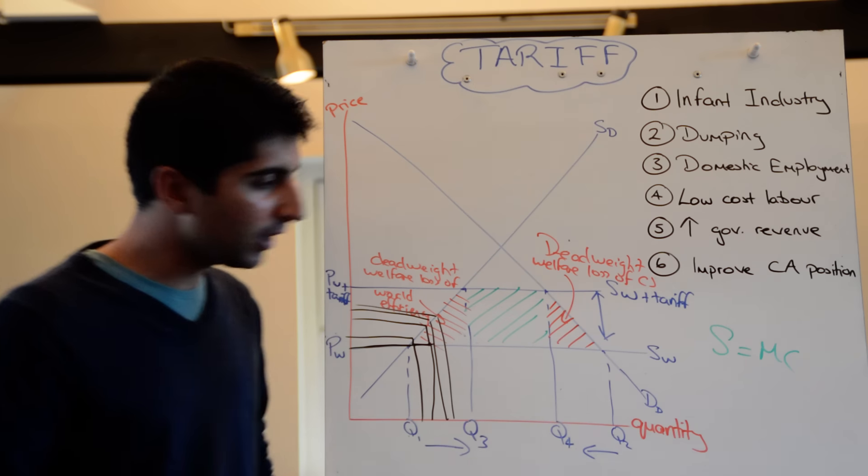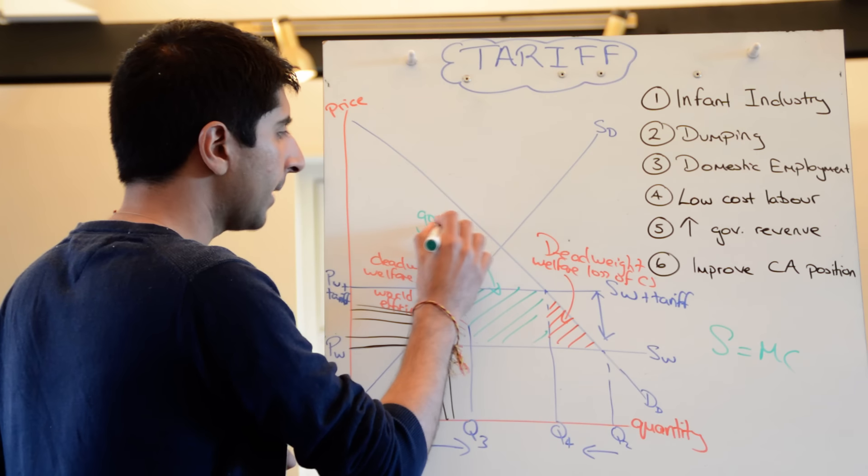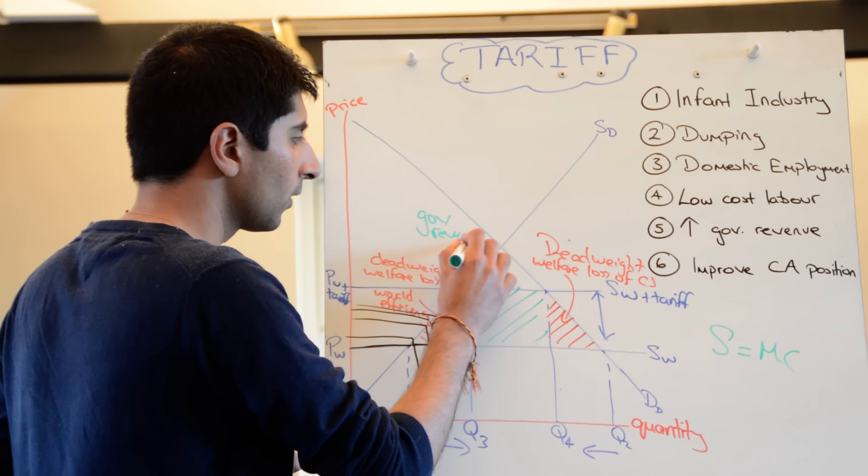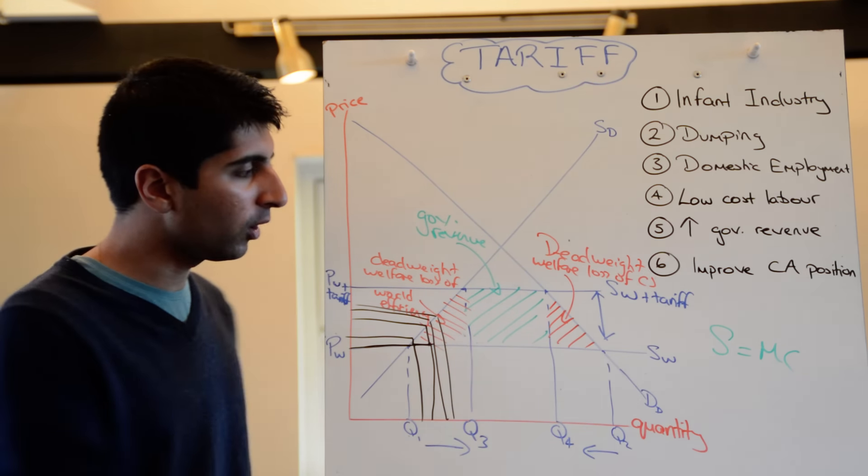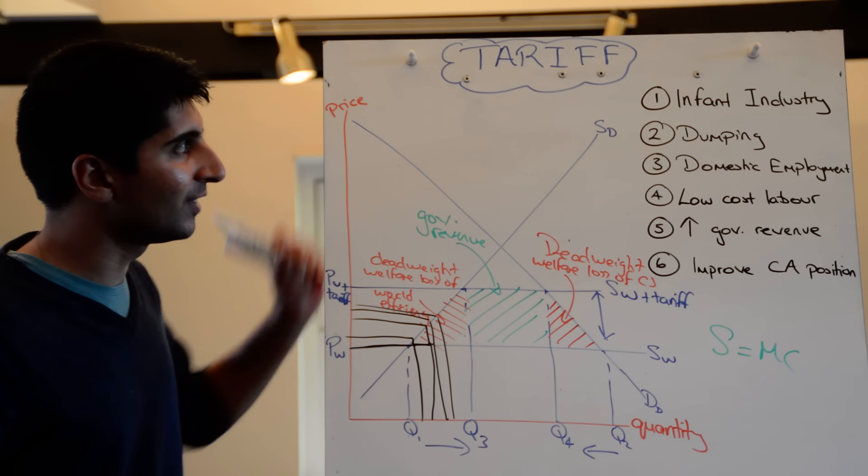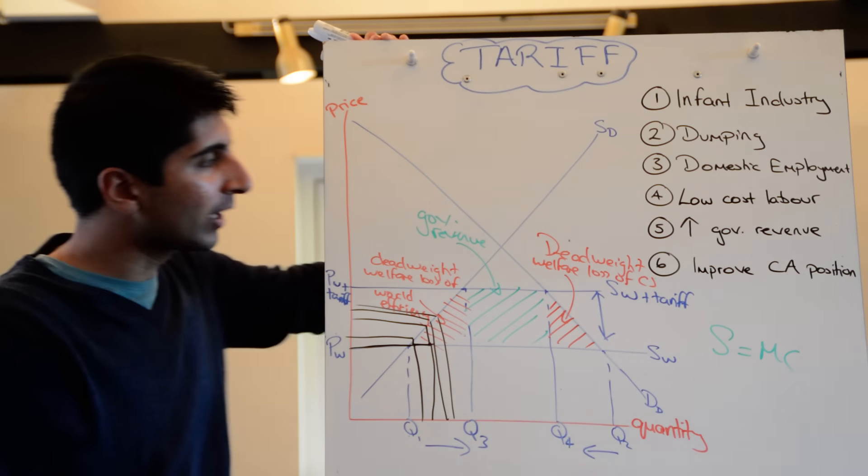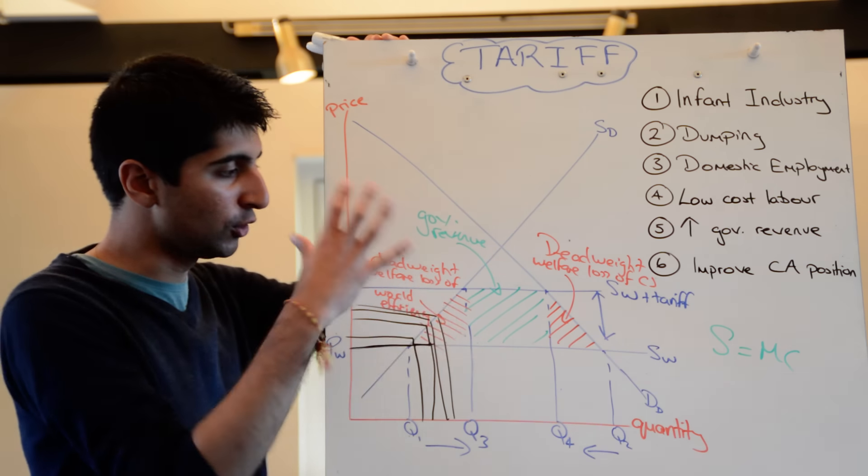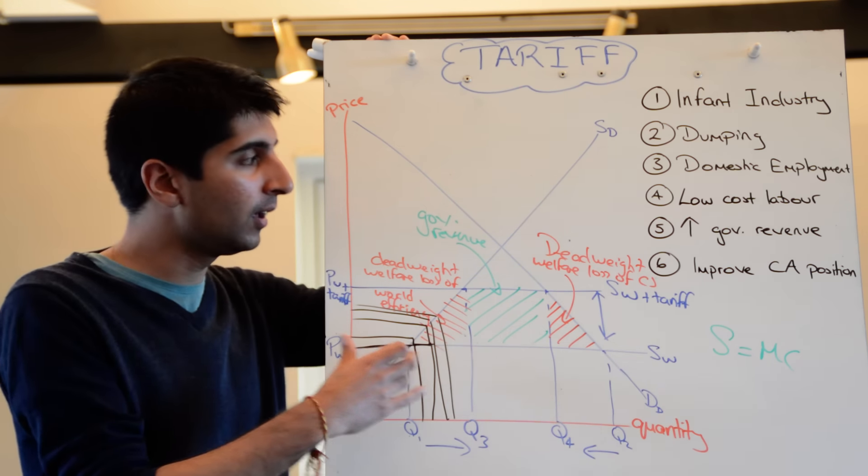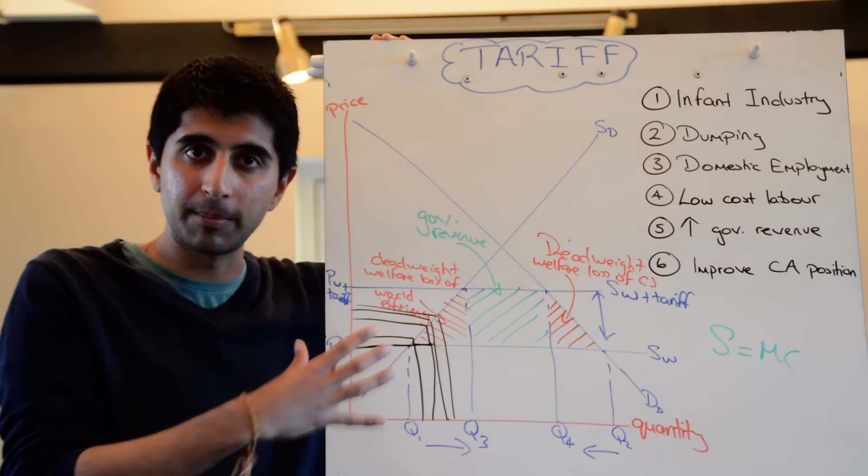The green box here is government revenue. Always useful to show that. And the two boxes on the other side are deadweight losses. One is of consumer surplus, one is of world efficiency. So when we come back to these items that we talked about before, can we relate those to this diagram? Well, in an essay, this is how you use the diagram. You draw it like this with the three bits shaded in. You then use these kind of arguments on the one hand to back up why a tariff might be a good idea.